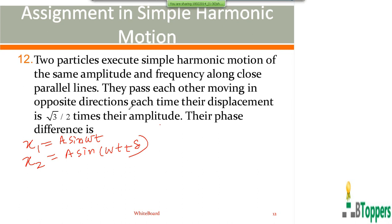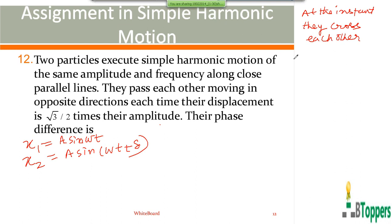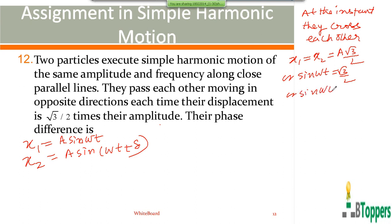The two particles cross each other at the instant their displacement is (√3/2) times the amplitude. So at that instant: A sin(omega·t) = A·(√3/2), giving sin(omega·t) = √3/2. And sin(omega·t + delta) = √3/2 also.